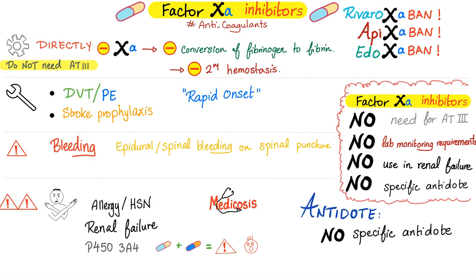The antidote: there is no specific antidote for factor XA inhibitors. Here's a mnemonic — just say 'No': No need for antithrombin 3, No lab monitoring requirements (you don't need PTT or PT), No use in renal failure, and No specific antidote. Just say no.